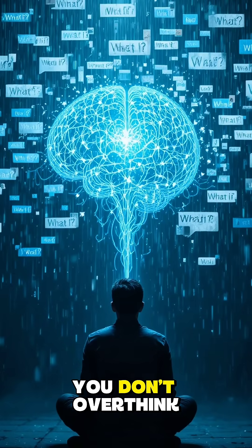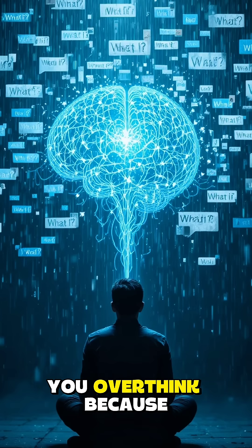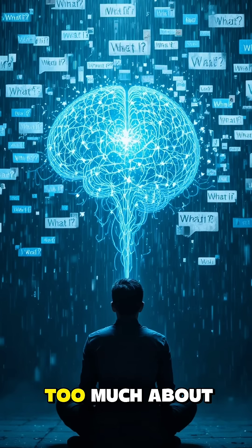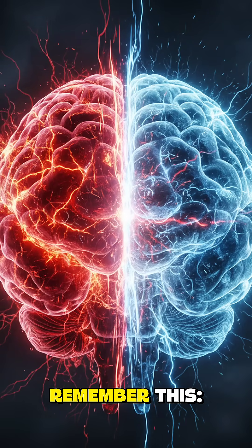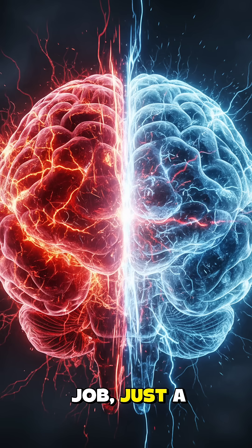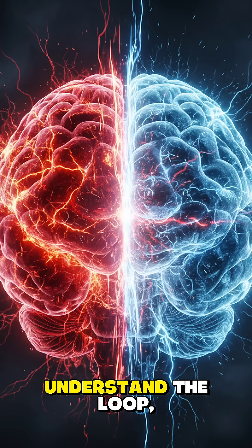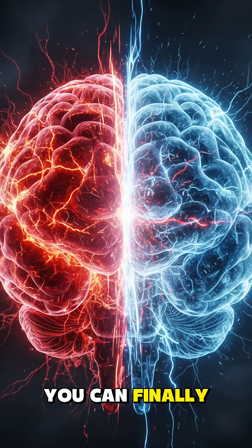Here's the truth. You don't overthink because you're broken. You overthink because your brain cares too much about protecting you. So the next time your thoughts keep looping, remember this: you're not losing control. Your brain is doing its ancient job just a little too well. And once you understand the loop, you can finally step out of it.